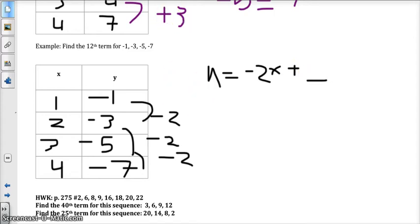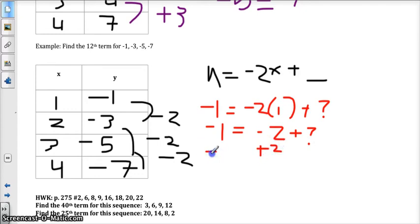So let's figure this out. We have negative 1 as our y equals negative 2 times 1, plus something. Negative 1 equals negative 2 plus something. Add 2 to both sides. We have 1 equals what we're being added to. So let's try that. Negative 2x plus 1.